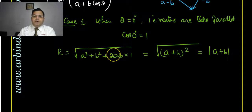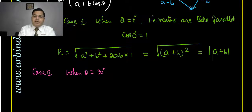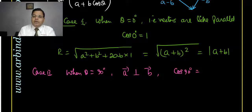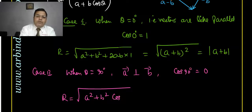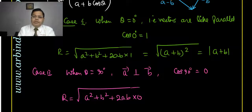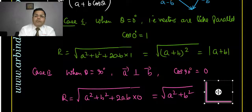Case 2: when θ equals 90 degrees, it means the vectors are perpendicular to each other. In this case cos 90° equals 0, so R equals under root of A squared plus B squared plus 2AB × 0, which simplifies to under root of A squared plus B squared. This is what I told you — using Pythagoras' theorem you can find the resultant when two vectors are perpendicular.